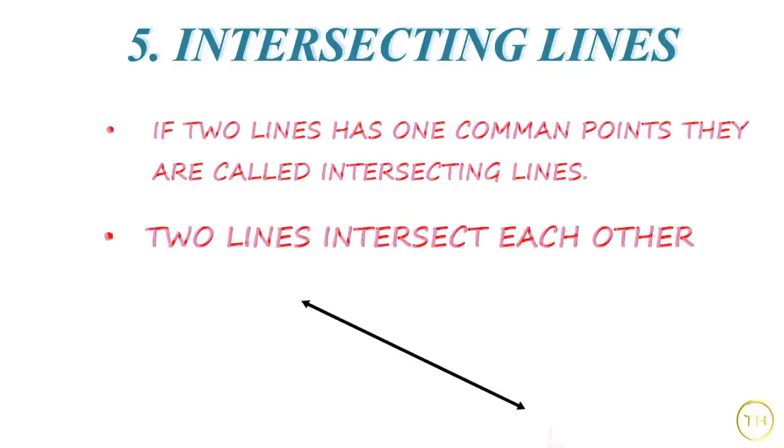In the above figure, line L and line M intersect each other at point P. These are the examples of intersecting lines.